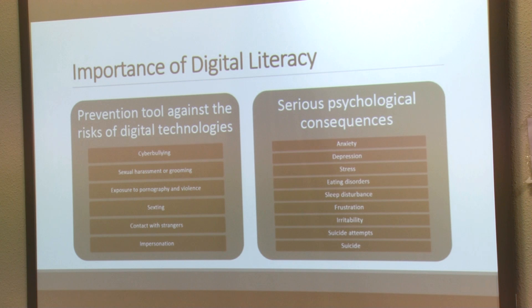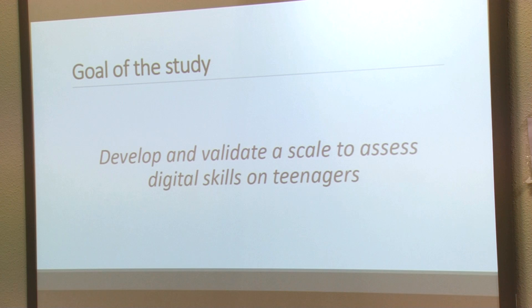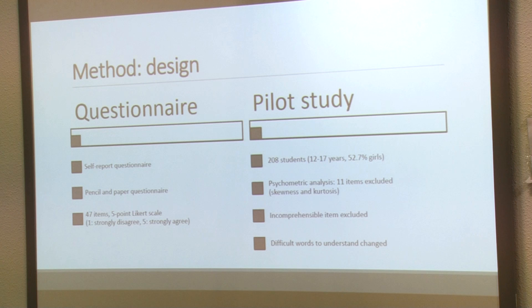The major problems arising from these risks are the serious psychological consequences that could affect the health and quality of life of teenagers. Many studies have shown a link between suffering these risks and experiencing anxiety, depression, stress, eating disorders, sleep disturbance, frustration, irritability, suicide attempts, and even suicides. Taking these things into account — the fact that we think teenagers are not digitally literate and the importance of digital skills — the goal of this study is to develop and validate a scale to assess digital skills in teenagers.